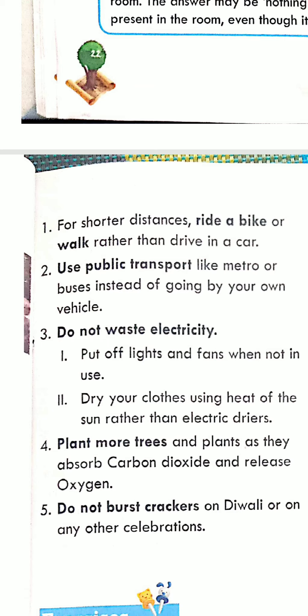The first thing you can do is: for shorter distances, ride a bike or walk rather than drive in a car. Suppose you want to go from your home to the market and the market is just 200 to 300 meters away. For that short distance, we can walk instead of using a bike or car. You can also use a bicycle. If you do this, the smoke emitted by your car or bike will be reduced, and you will have contributed to reducing pollution.